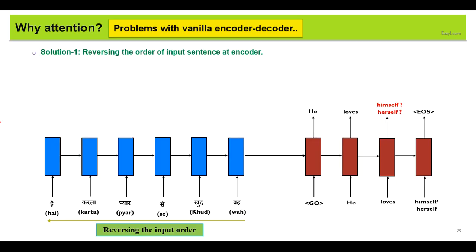Now let's see some solutions to the problems with the vanilla encoder decoder architecture described previously. First solution could be that we can reverse the order of the input sentence at the encoder side.